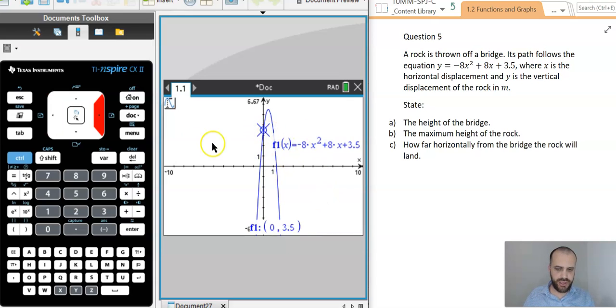Now, you can see it tells me the window set. I'm just arrowing across, using these two arrows here. 0, 3.5. 3.5 is the height of the bridge.